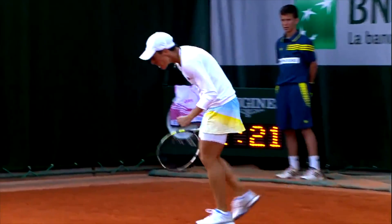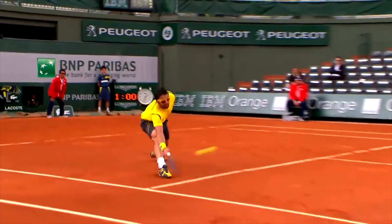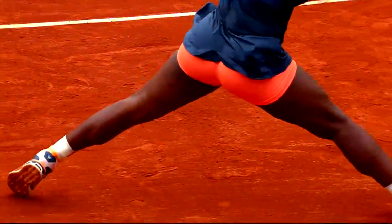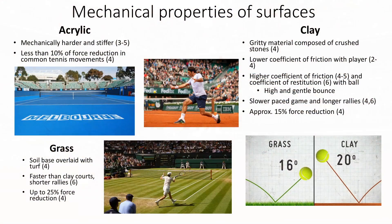However, clay courts create a high frictional coefficient with the ball and create a slower-paced game compared to an acrylic surface. Due to its increased coefficient of friction and coefficient of restitution, clay courts create a high and gentle bounce, as depicted when comparing the bounce on a clay court to a grass surface. Grass is a faster surface than clay and rallies are often shorter. A grass court allows up to 25% of force reduction during movements.